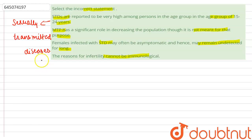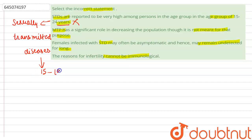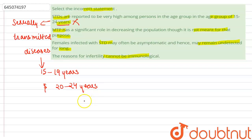So the first statement — that sexually transmitted diseases are reported to be very high among persons in the age group of 15 to 24 years — is correct, and therefore this option is incorrect. Compared with older adults, sexually active adolescents aged 15 to 19 years and young adults aged 20 to 24 years are at higher risk of acquiring sexually transmitted diseases for a combination of behavioral, biological, and cultural reasons.